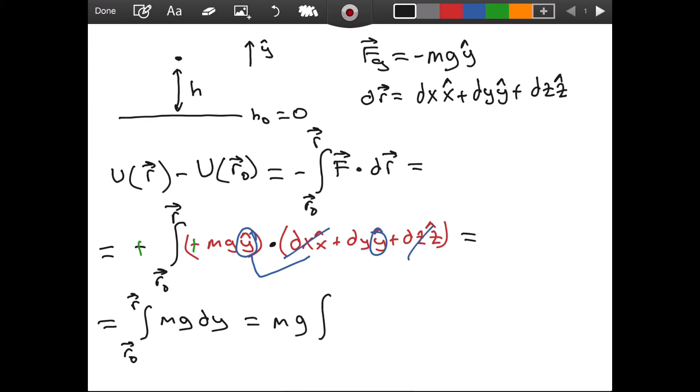So we take mg out of the integral sign. And we are left with, instead of r naught, I'm going to write x naught, y naught, z naught. I am representing it with its components. We can represent a vector with its components. And for r, I will have x, y and z. And we have dy. So since we have a y integral, we will be using the y components.